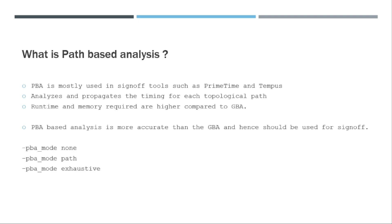PBA analysis is the highest accuracy and it is hence used for signoff flows. If your chip is going to tape out, the PBA has to be used for the signoff. But PBA also has a couple of modes in it: PBA mode none, PBA mode path, and PBA mode exhaustive. So what's the difference between these three? For example, PBA mode none represents it is using GBA. So PBA is not at all used in this case.